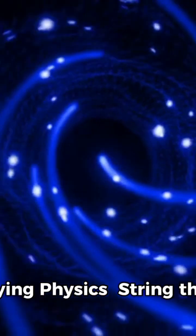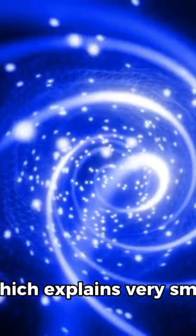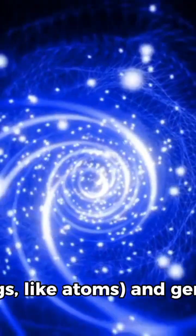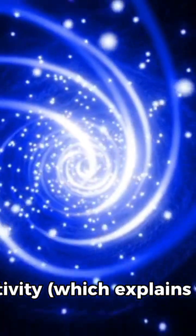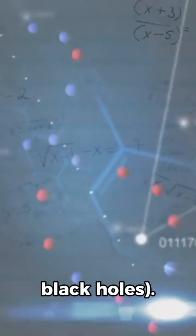Three: Unifying physics. String theory aims to unite quantum mechanics, which explains very small things like atoms, and general relativity, which explains very big things like planets and black holes.